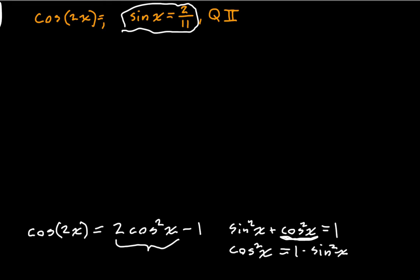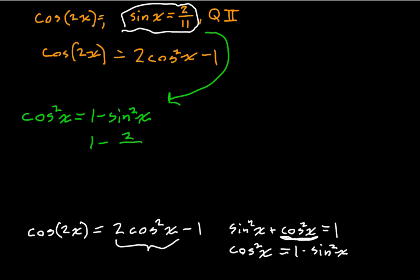Let's bring that up here. Let's get to solving. We know that the cosine of 2x is equal to 2 cosine squared of x minus 1. Cosine squared of x is important. We know that cosine squared of x is equal to 1 minus sine squared of x. What's the sine of x? Well, we learned that's 2 over 11. So this is going to be 1 minus 2 over 11 squared.